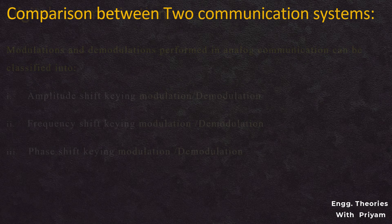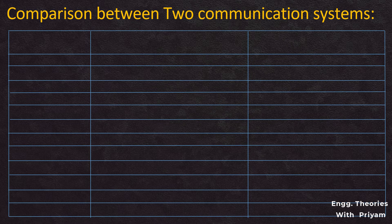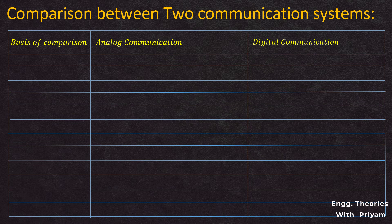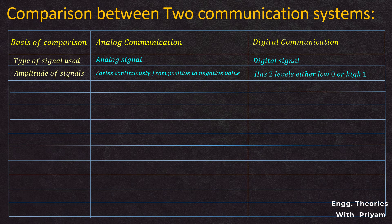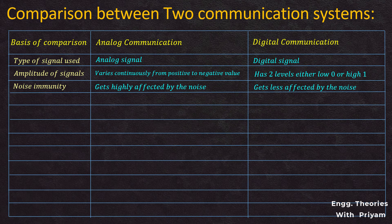Now let's see the comparison between analog and digital communication system. Type of signal used: analog communication uses analog signal; digital communication uses digital signal. Amplitude: in analog communication, amplitude varies continuously from 0 to 100; in digital communication, amplitude has two levels — low represented by 0 and high represented by 1. Noise immunity: in analog communication the signal gets more affected by noise; in digital communication the signal gets less affected by noise.